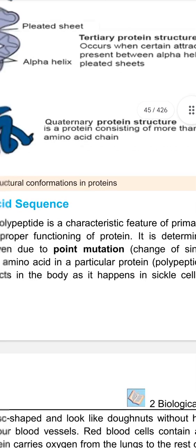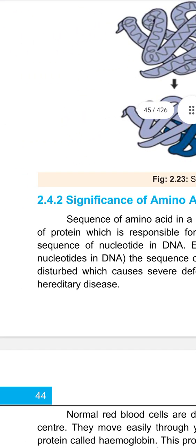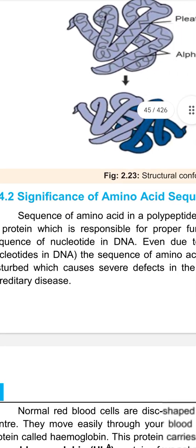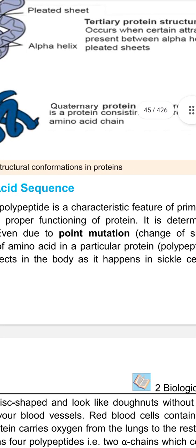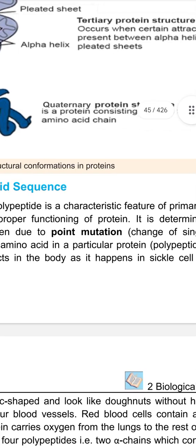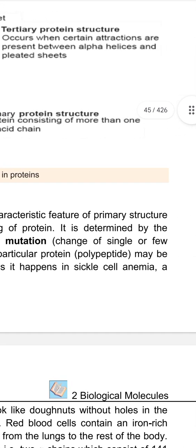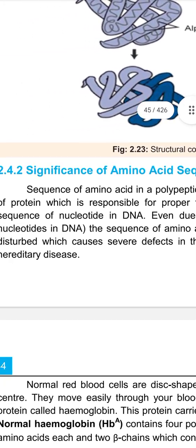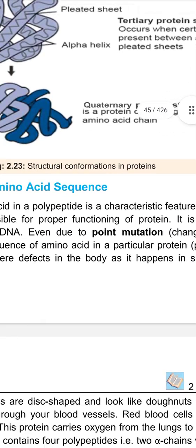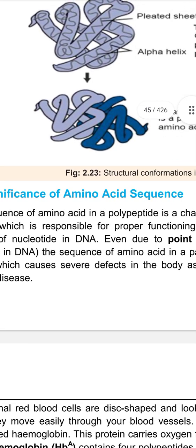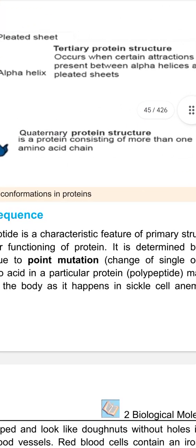The sequence of amino acids in a protein is determined by the sequence of nucleotides in DNA.